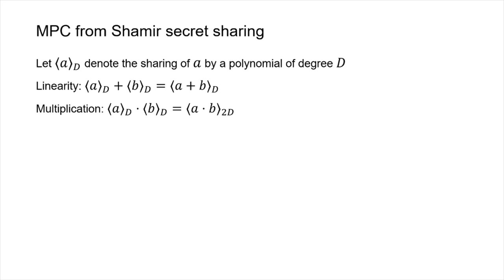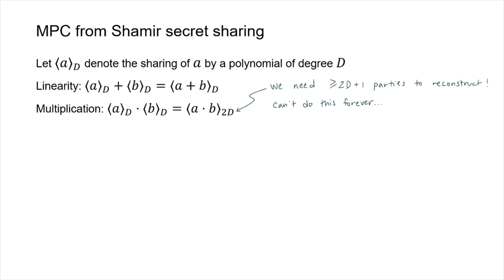The thing to notice about doing local multiplication is that the degree of the resulting share is the sum of the original degrees of the things that were multiplied together. In order to reconstruct this resulting share you need degree plus one distinct points to interpolate it, which means we would need 2d + 1 parties to reconstruct. So if we do enough multiplications we run out of parties, and typically to get more general computation you have to reduce this degree in some way.